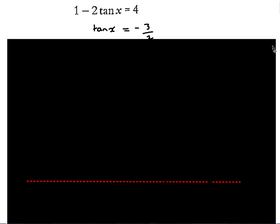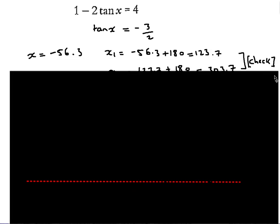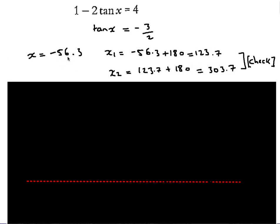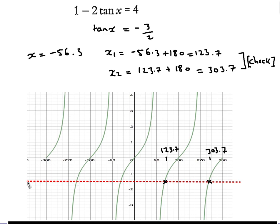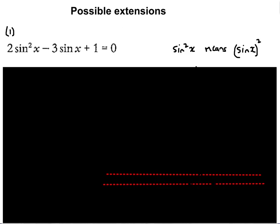For a tan example: rearrange to tan x = -3/2. Inverse tan gives a negative answer, so add 180° (the period of tan) to get 123.7° as the first solution. Then keep adding 180° to find more answers: the second solution is 303.7°. Graphically, the line y = -3/2 intersects the tan graph at 123.7° and 303.7°.